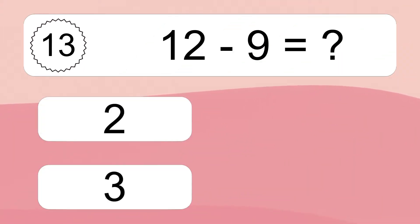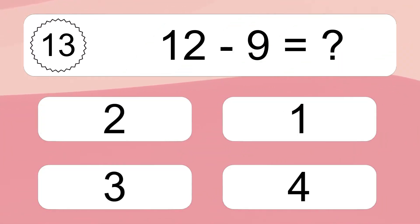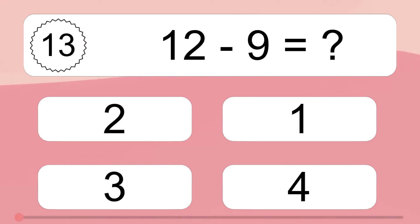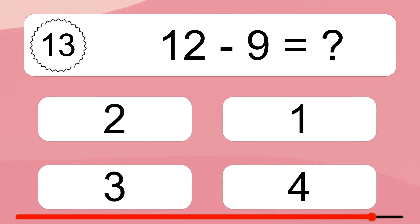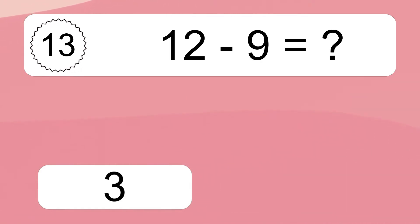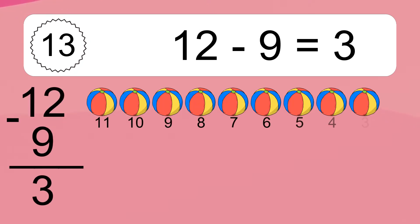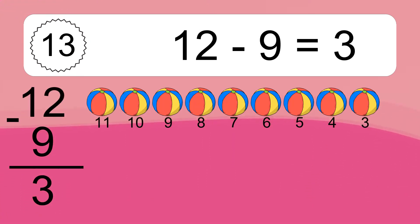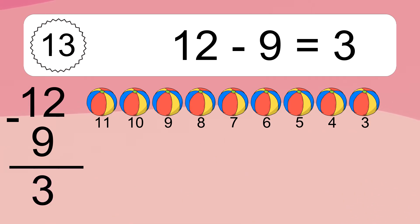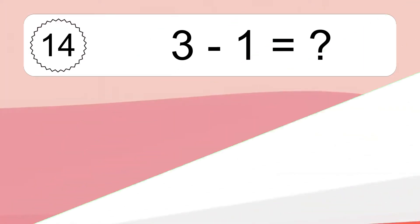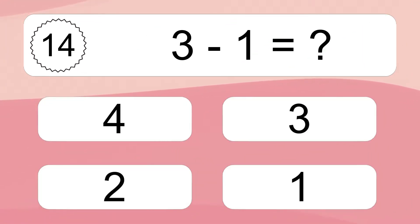12 minus 9 equals what? 12 minus 9 equals 3. Let's count it: 11, 10, 9, 8, 7, 6, 5, 4, 3.